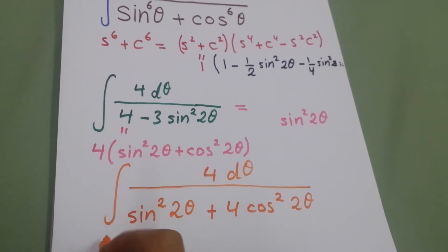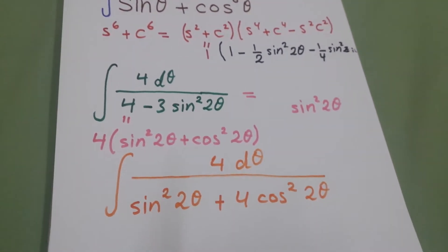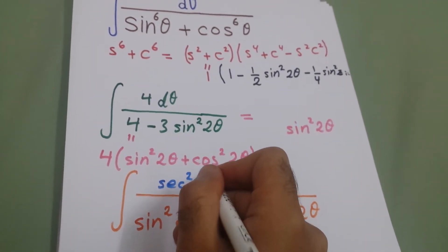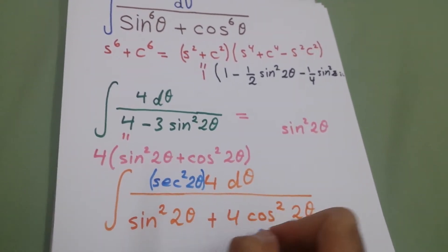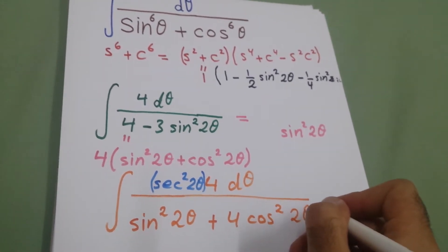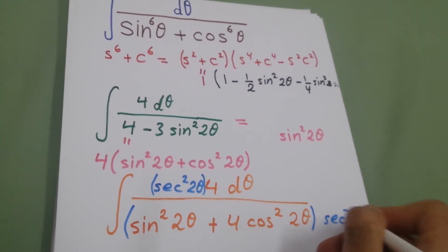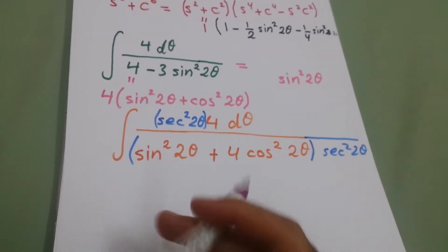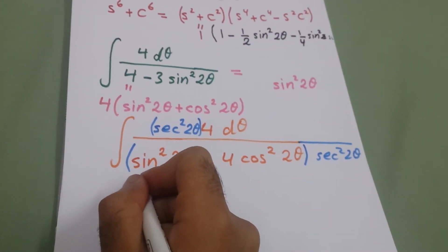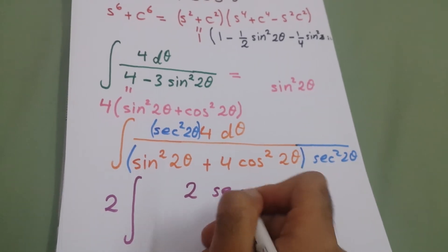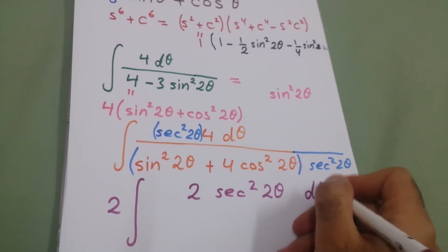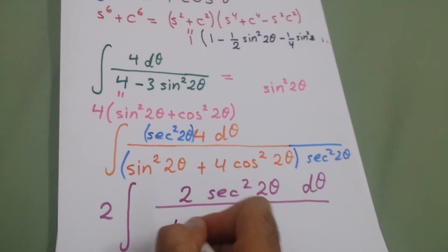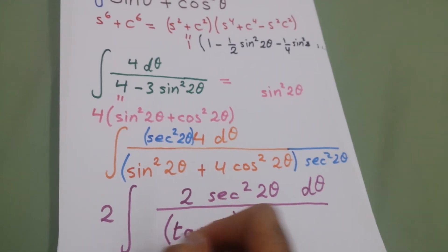Now we divide by cos²(2θ). The denominator becomes secant²(2θ) times 4 in the numerator, and dividing the denominator by cos²(2θ) gives tan²(2θ) + 4. We take a factor of 2 outside the integral, leaving sec²(2θ) in the numerator and tan²(2θ) + 4 in the denominator.